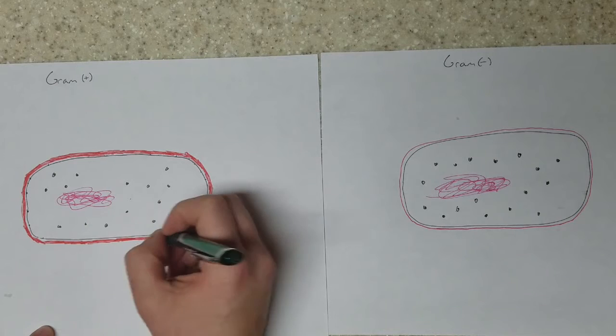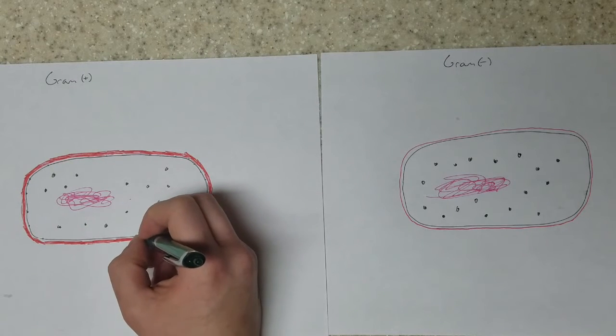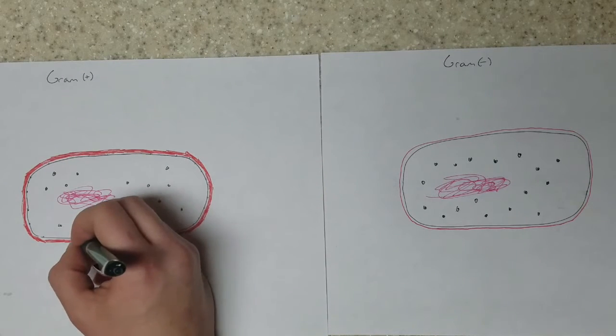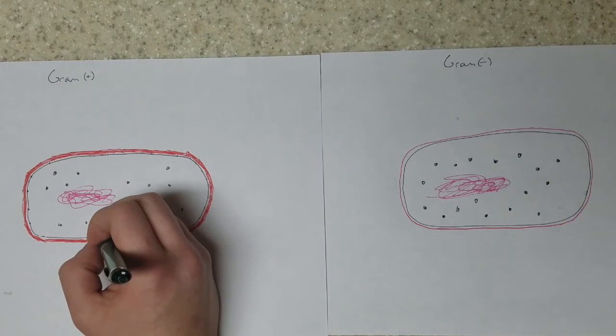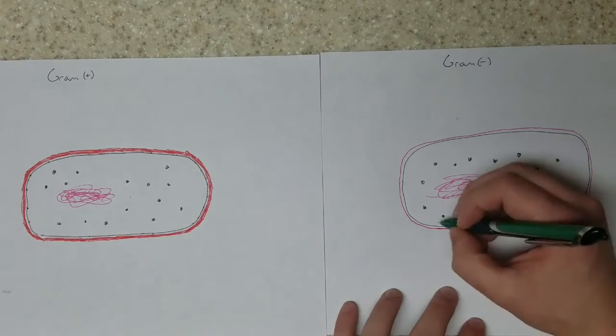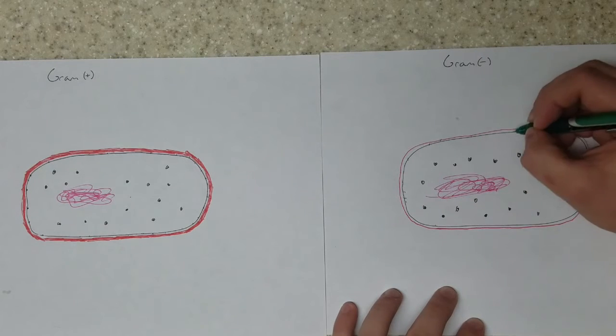You can label them if you need to. No real difference, but they're found on the plasma membrane of both. Yeah, there you go, it's on the gram-negative cell too.